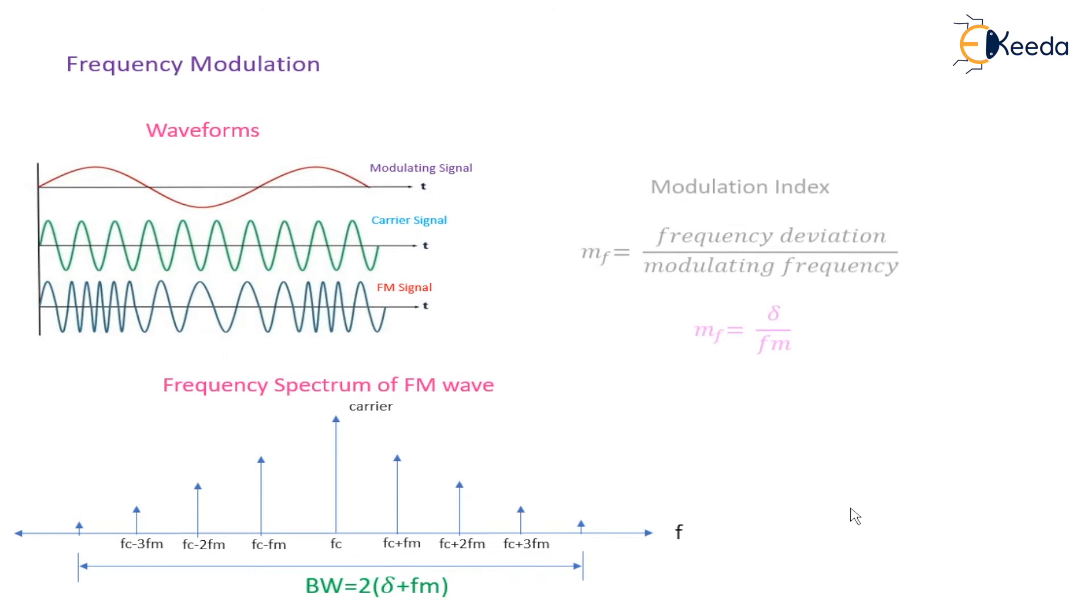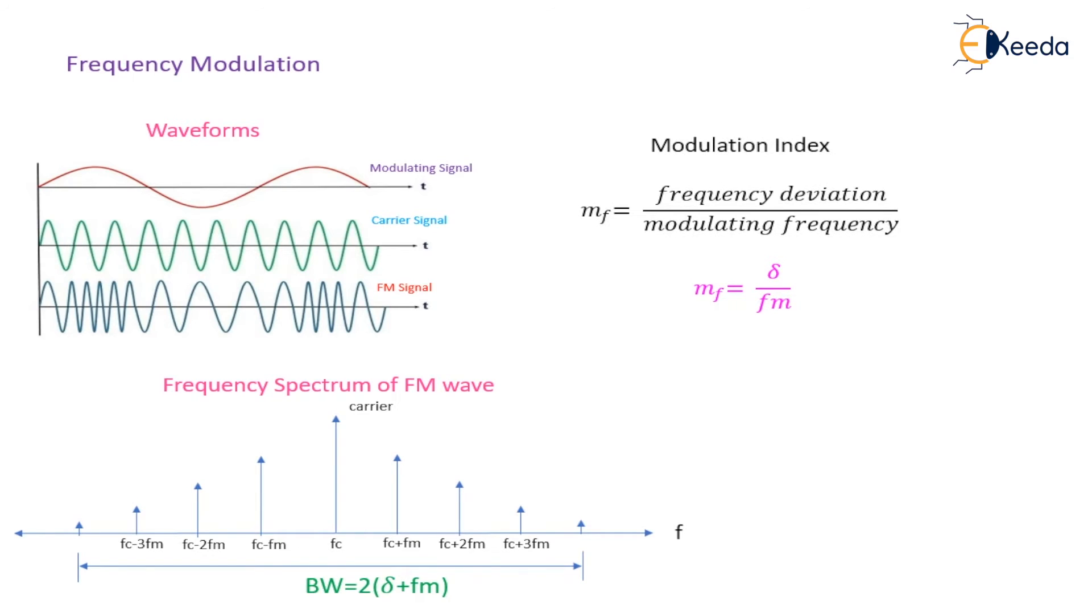Now, here we will see the modulation index. The modulation index of the FM wave is indicated as mf, which is the ratio of the frequency deviation divided by modulating frequency. Mathematically, it is shown as mf equal to delta by Fm.